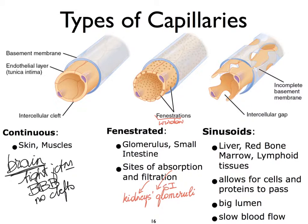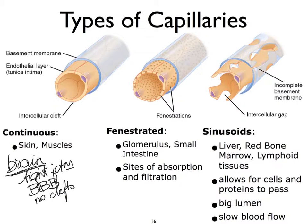Finally, we get to the really, really leaky capillaries — sinusoids — where we see huge intercellular gaps, big enough that white blood cells and red blood cells can leave, for instance, the red bone marrow and enter the circulation. We also find sinusoids in the liver, because the liver needs access to a lot of the blood's ingredients — as you know, the liver is an important detoxifying organ with many other functions. The lymphoid tissues also have sinusoids, such that many of our white blood cells can emigrate.